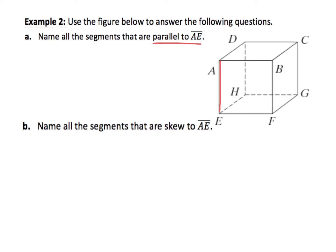So AE would also be parallel to BF. You can see how that's in the same plane, going the same direction. We could do CG. Again, it's going in the same direction. I know there's not a plane that connects these two, but there could be, just as long as they're going in the same direction. And then finally, you also have segment DH.